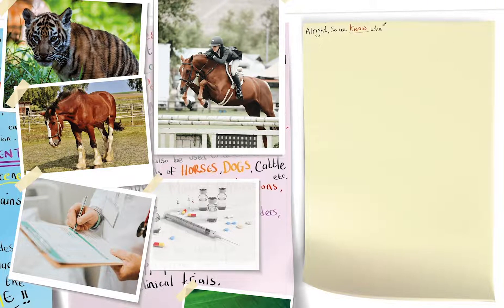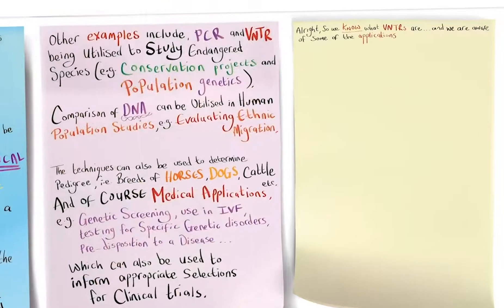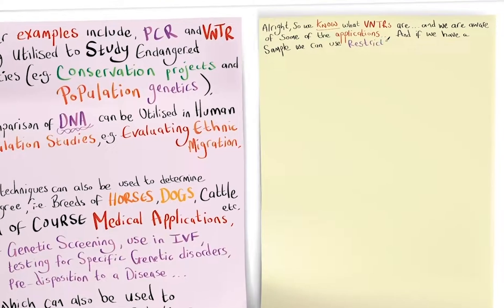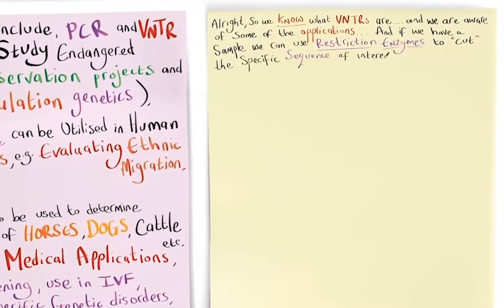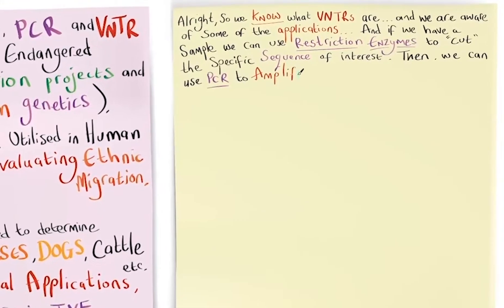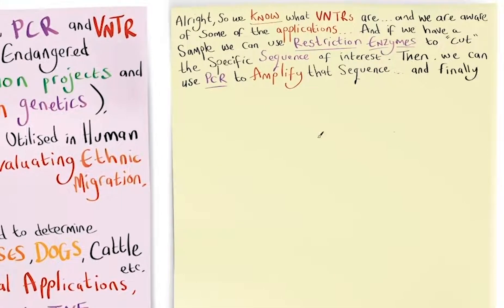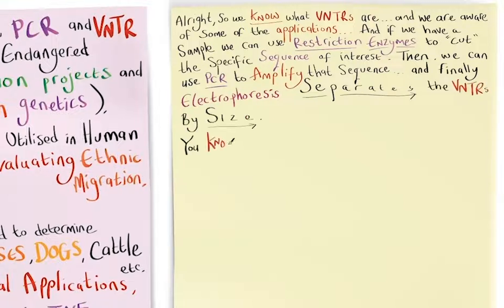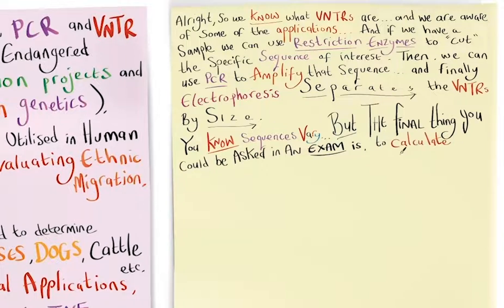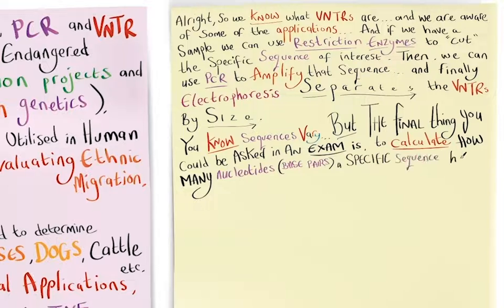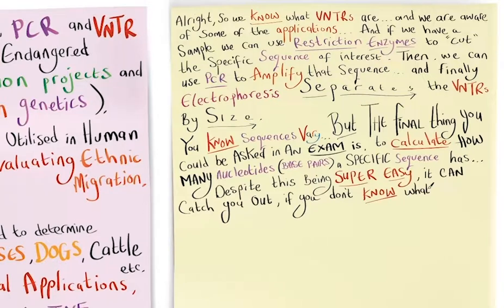Alright, so we know what VNTRs are and we are aware of some of the applications. And if we have a sample, we can use restriction enzymes to cut the specific sequence of interest, then we use PCR to amplify that sequence, and finally, electrophoresis separates the VNTR by size. You know sequences vary, but the final thing you could be asked in an exam is to calculate how many nucleotides, or base pairs, a specific sequence has. Despite this being super easy, it can catch you out if you don't know what's what.